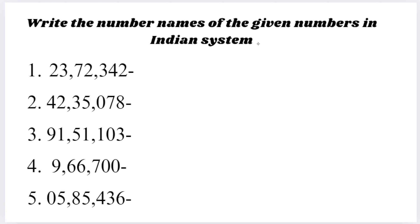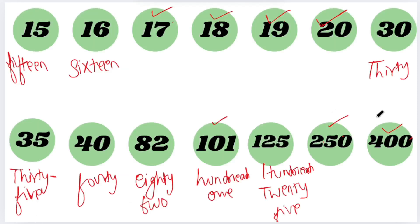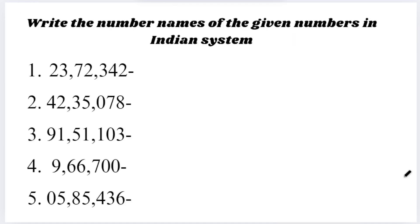Let's move to the next level — an IA level number. If you are studying third standard, this number name lesson is enough. If you are studying fourth, fifth, or sixth, you can go for an IA level like the Indian system or International system.